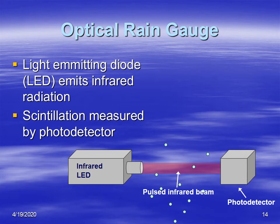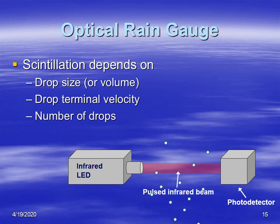As precipitation falls through the infrared beam, it causes scintillation that's detected by the photodetector. The type of scintillation can be calibrated and determines the type of precipitation, the amount of precipitation, and the intensity. The scintillation depends upon how big the drop is — the drop size — how fast it's falling, and also the number of drops.